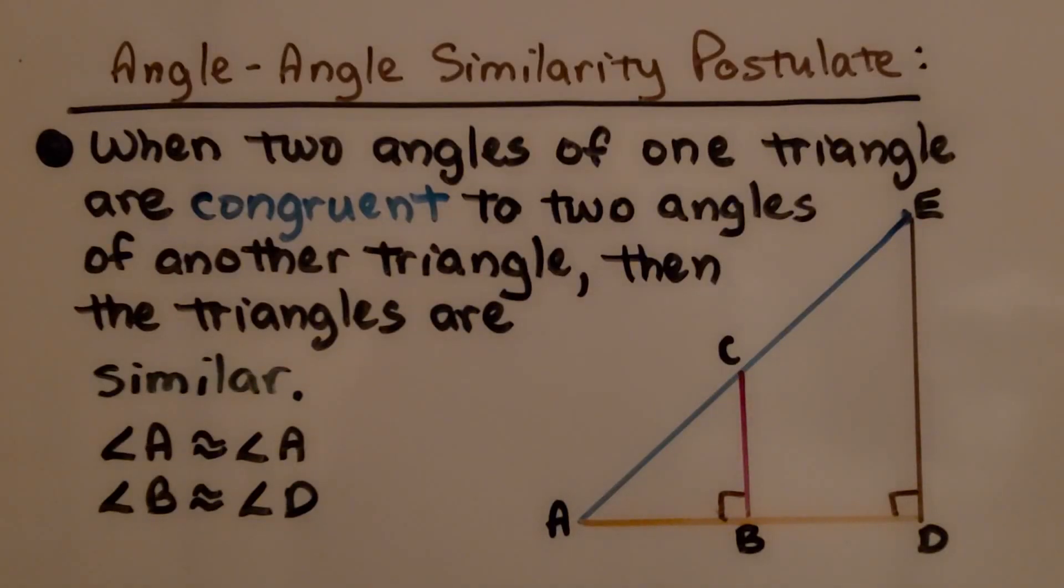For the past couple videos, we've learned about angle-angle similarity and its postulate. When two angles of one triangle are congruent to two angles of another triangle, then the triangles are similar.